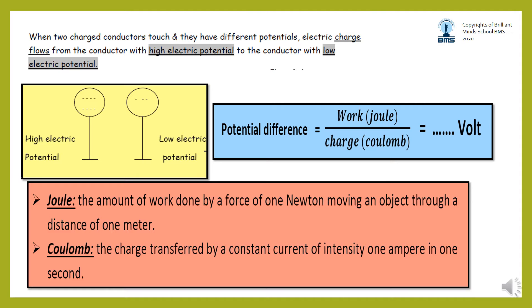When two charged conductors touch, they have different potentials. So the electric charge will flow from conductor with high electric potential to conductor with low electric potential.